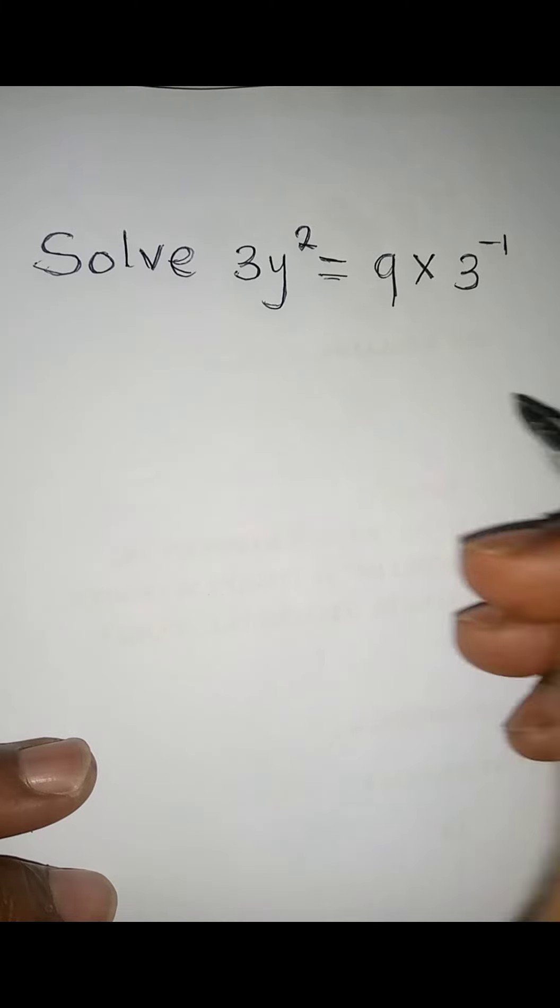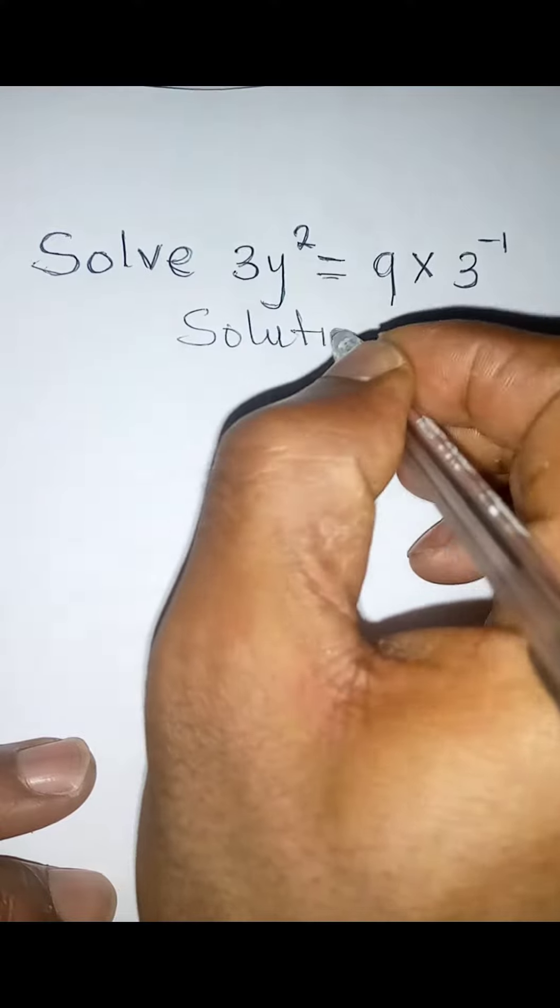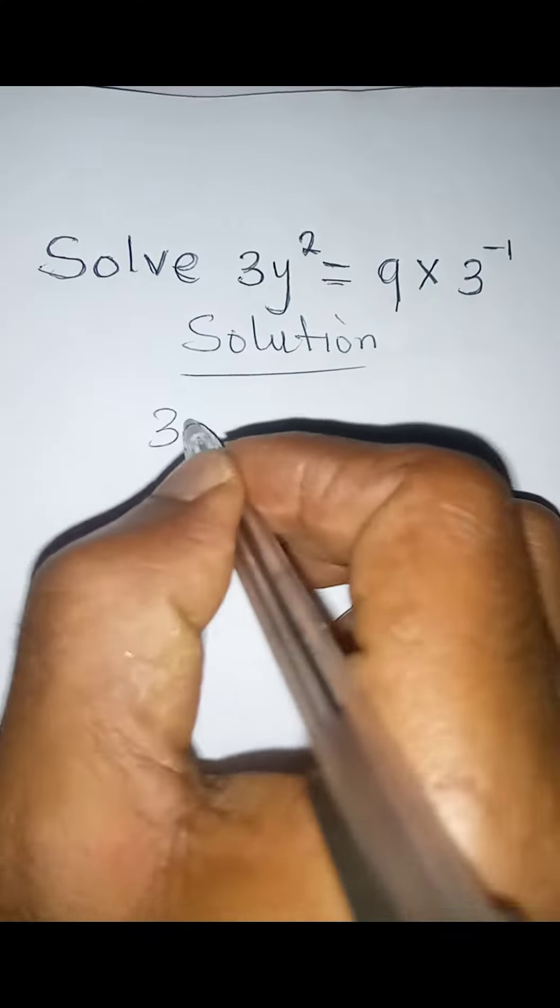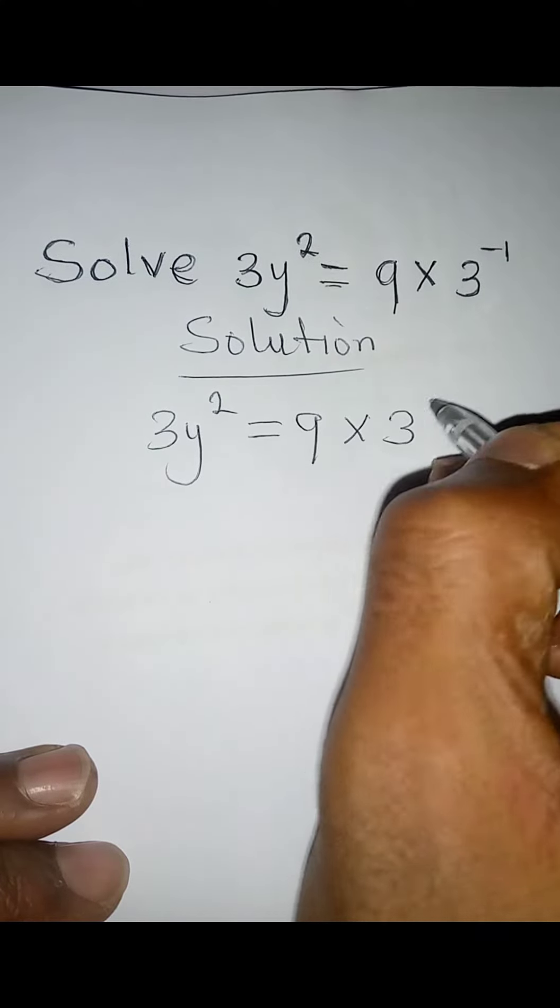Hello everyone, let's solve this problem. Solution: we have 3y² = 9 × 3⁻¹.